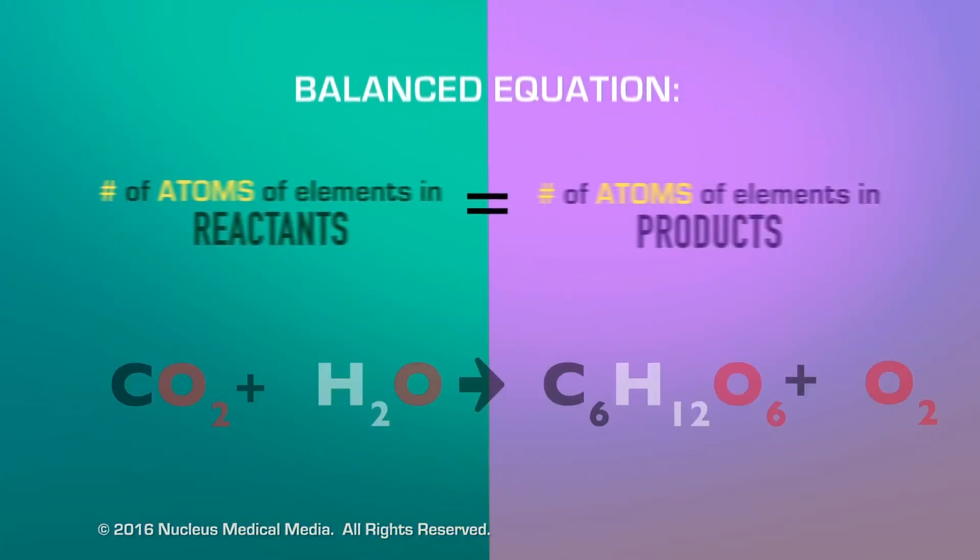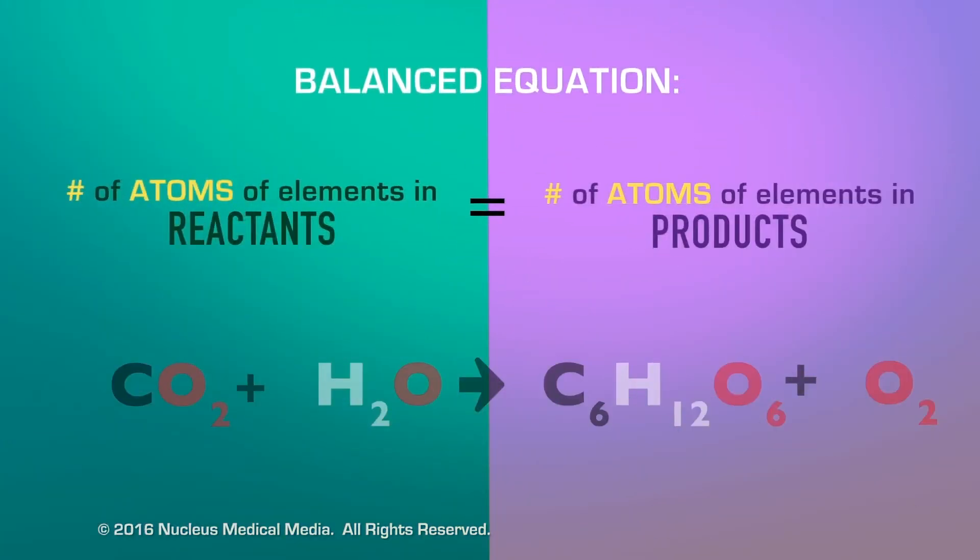So, to balance the equation, we have to make sure that the number of atoms of each element in the reactants is equal to those in the products. This is because a chemical reaction must abide by the Law of Conservation of Matter. No atoms are created or destroyed.